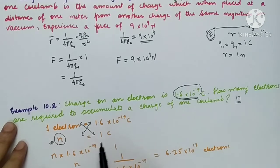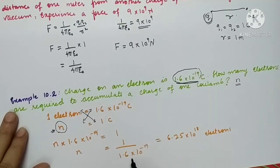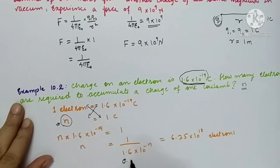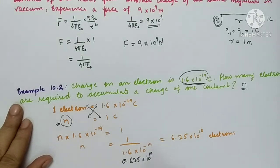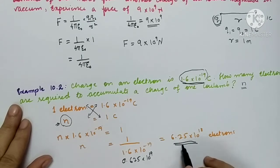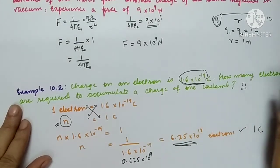By cross multiplication: n × 1.6 × 10⁻¹⁹ = 1, so n = 1 / (1.6 × 10⁻¹⁹). This comes out to 6.25 × 10¹⁸. So 6.25 × 10¹⁸ electrons are needed to make a charge of 1 coulomb, because one electron has such a small charge of 1.6 × 10⁻¹⁹ coulomb.